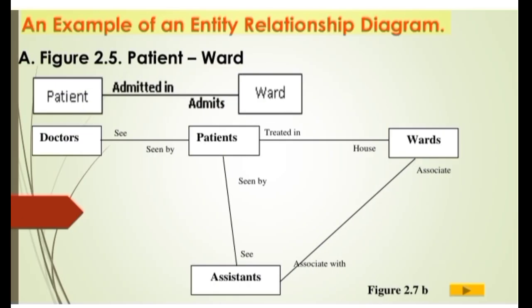An example of an entity relationship diagram — Figure 2.7A, Hospital Case: a Bird diagram without cardinality constraints. The entities shown include Patients, Doctors, Assistants, and Wards. The relationships shown include Seen By, Treated In, Houses, and Associate With.